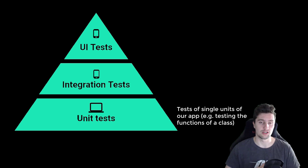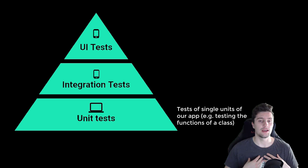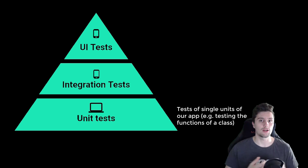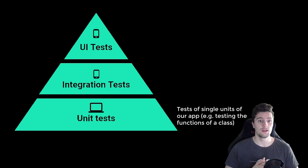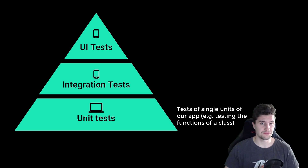A unit test could be, for example, a function that takes a list of integers and calculates the sum. We give it a list of integers and make sure the correct result comes out. That would be a unit test because it's not dependent on any other component — just that single function. Unit tests should make up about 70% of the test cases in our app.